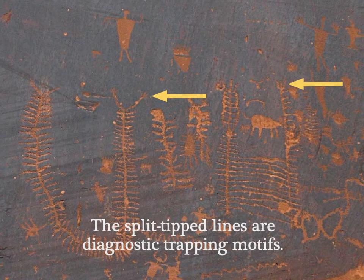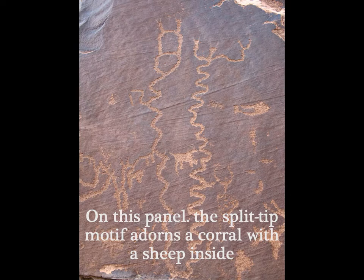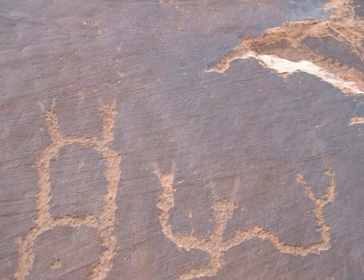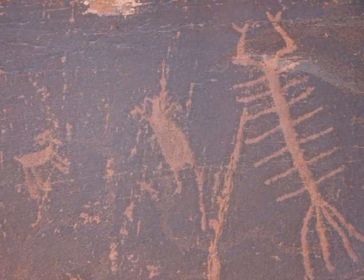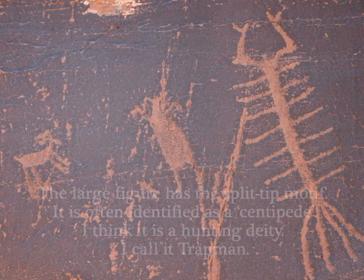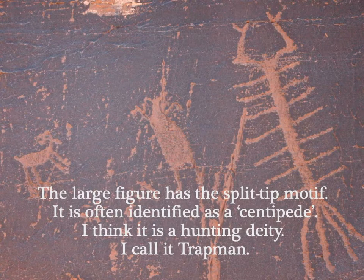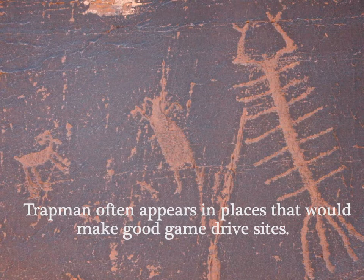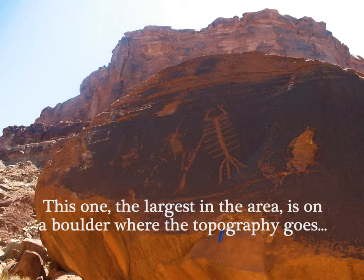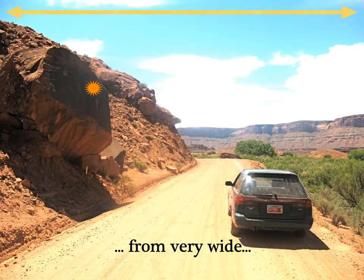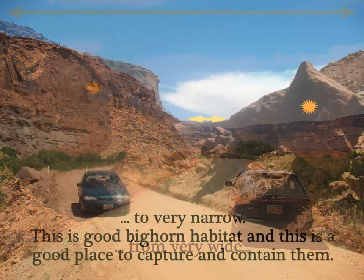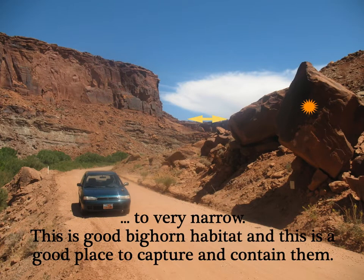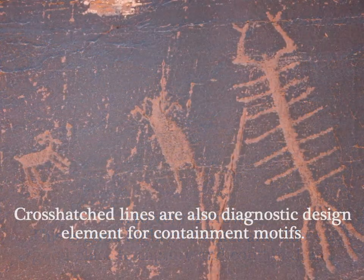The split-tipped lines at the ends of lines are diagnostic trapping motifs — here a sheep is inside a bag, and at the top there are split tips. This is an abstract rather than representational symbol, but it appears time and again in hunting scenarios. People often call this a centipede, but with the cross-hatched lines and the split tip, I think it represents a trapping deity I call Trap Man. Trap Man often appears in places that would make good game drive sites. The largest Trap Man I know of is on a boulder where the topography goes from very wide bighorn sheep habitat down to a narrow slot canyon — a good place to trap sheep. The cross-hatched lines are a diagnostic design for containment.